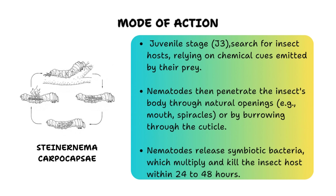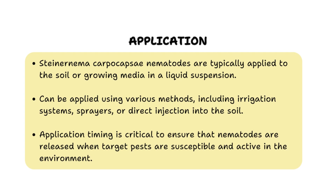The juvenile stage three nematode searches for the insect host using chemical cues emitted by its prey, then penetrates the insect's body through natural openings such as the mouth or spiracles, or by burrowing through the cuticle. The nematodes then release their symbiotic bacteria, which multiplies and kills the insect host within 24 to 48 hours. In terms of application, Tenanama kapokapsi nematodes are applied in a liquid suspension using irrigation systems, sprayers, or direct injection into the soil, with timing crucial to ensure nematodes are released when target pests are most susceptible.